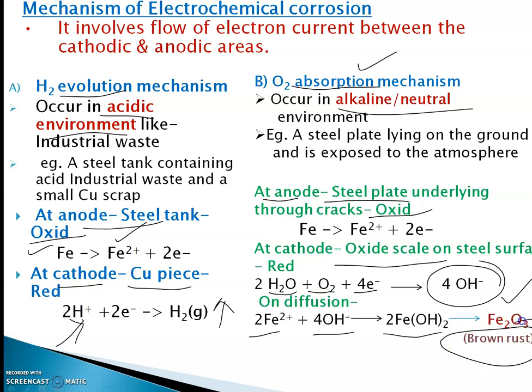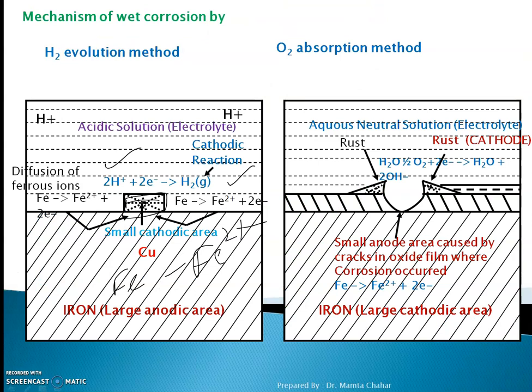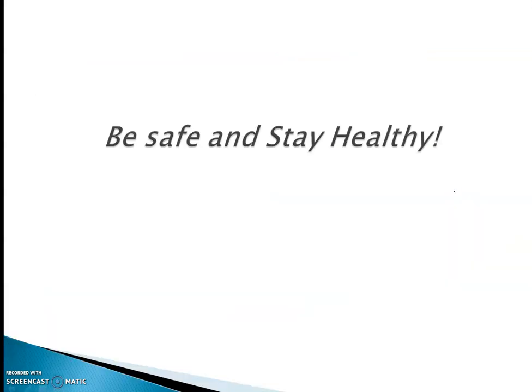This is what we call rusting. Looking at the diagram, this is an iron plate or box with cracks where rusting occurs. In this video we have studied what wet corrosion is and the two mechanisms: hydrogen evolution and oxygen absorption, along with their diagrams.